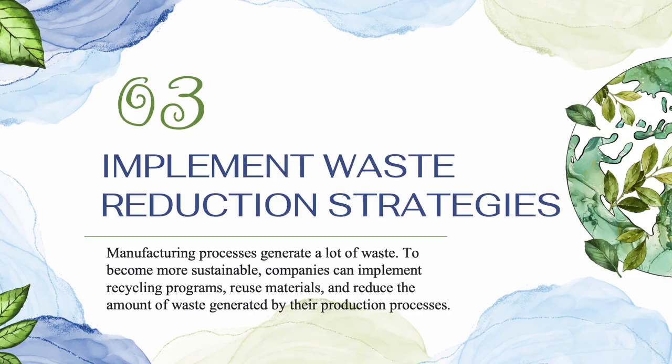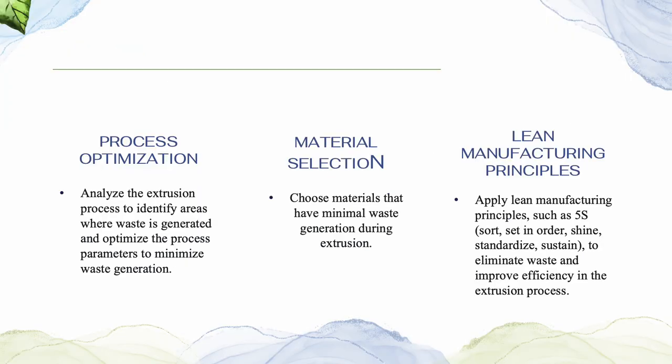Implement waste reduction strategies. Manufacturing processes generate a lot of waste. How to implement waste reduction strategies: First, by process optimization. Analyze the extrusion process to identify areas where waste is generated and optimize the process parameters to minimize waste generation. This includes adjusting temperature, pressure, and material feed rates to achieve optimal output and reduce scrap.